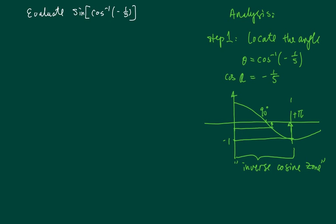This is crucial because you need to know where this inverse cosine is defined. Cosine inverse is defined between 0 and pi because it's minus 1 over 5.